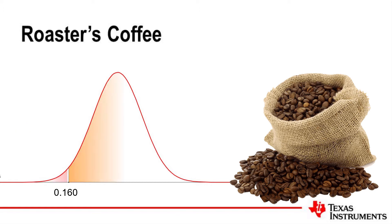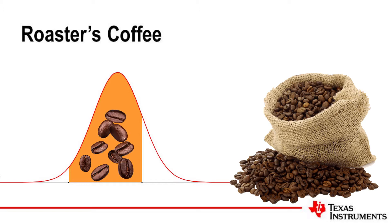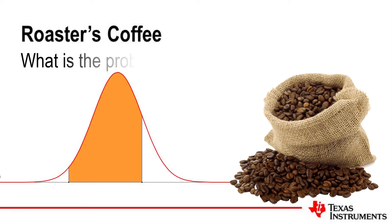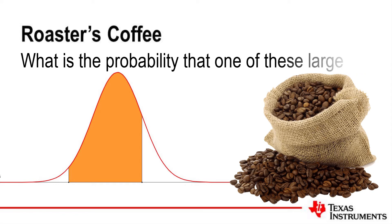This leaves a large quantity of beans to be tested. Roasters put these beans into large bags. Testers select 10 beans from these bags, and if at least 8 of the selected beans weigh more than 0.165 grams, the whole bag is accepted for roasting. We want to know what is the probability that one of these large bags is accepted for roasting.